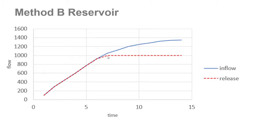In Method B, let's say anything below 1,000 cfs is passed through, so you just pass inflow and maintain your pool at the top of conservation. But once inflow exceeds 1,000 cfs, storage actually begins because you're only releasing 1,000 cfs at that point. That's a simple way of understanding a Method B reservoir.